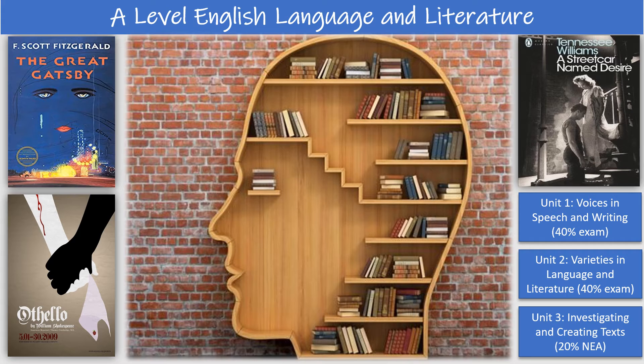Paper 2 is themed around the study of society and the individual. In this part of the course, students study Shakespeare's Othello alongside The Great Gatsby by F. Scott Fitzgerald. Having studied the texts as separate entities in Year 12, Year 13 involves exploring how both texts present shared thematic ideas around the concept of society and the individual. This means looking at the presentation of race, gender, identity and belonging in the texts, and exploring how the views of these issues are shaped by historical and social contexts.